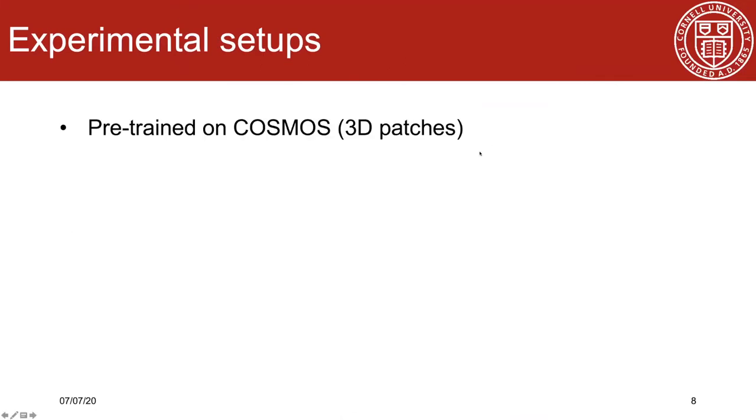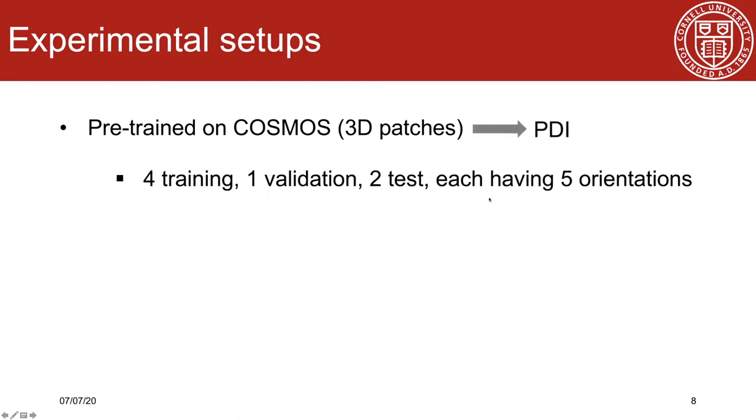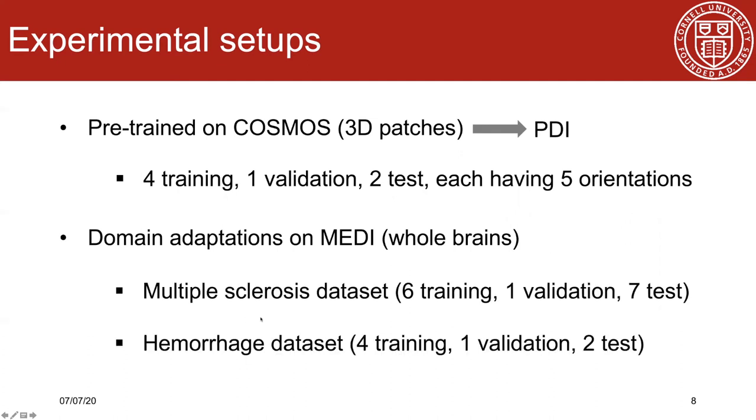The network was first pre-trained on COSMOS dataset with 3D patches extracted from the whole brain volume. Our in-house COSMOS data consists of 7 subjects, which have 5 orientations. This pre-trained network was called PDI, which stands for probabilistic dipole inversion network. After obtaining the pre-trained PDI, domain adaptations were deployed on different MEDI dataset using amortized variational inference, where the whole brain was fed into the network during domain adaptation. We worked on two types of patient dataset, the multiple sclerosis dataset and hemorrhage dataset. The adaptive network was called probabilistic dipole inversion with variational inference, PDI-VI, in the following experiments.